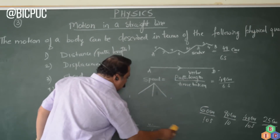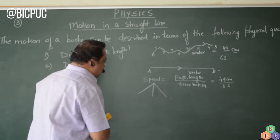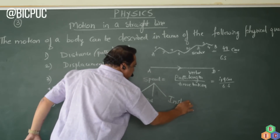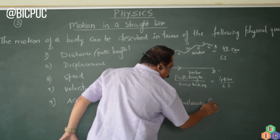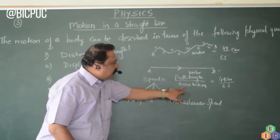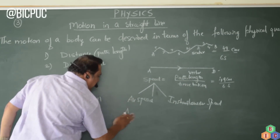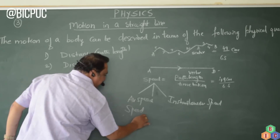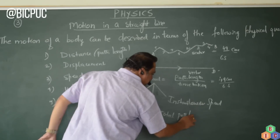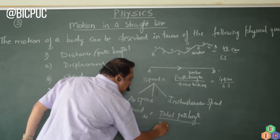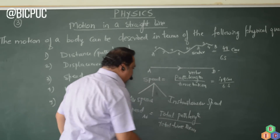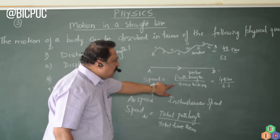There are two more types of speeds: average speed and instantaneous speed. Average speed — to get average speed from the basic definition of speed, you just add the word 'total': total path length divided by total time taken. You add the word 'total' for both path length and time taken to get average speed.